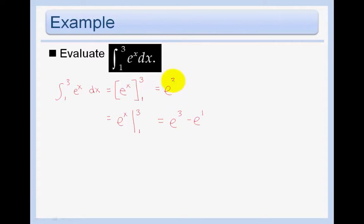Or you can write e to the x evaluated between 1 and 3. These are synonymous. But that just means you do e to the third minus e to the first. And again, same thing. Because I'm evaluating it at 3 minus evaluating it at 1. So you can use this notation or this notation. I go back and forth, honestly.